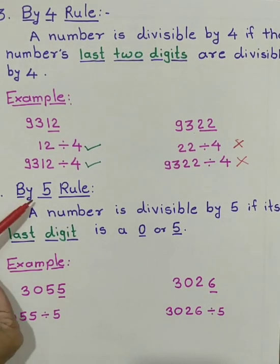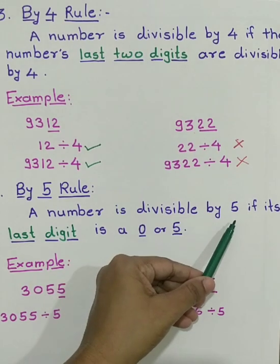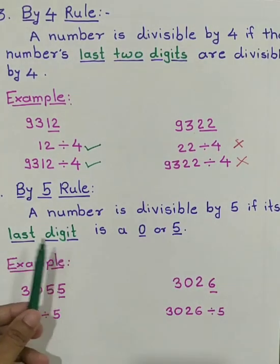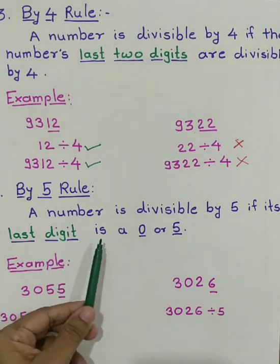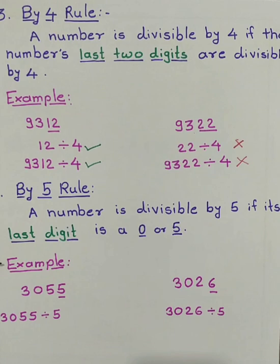So next rule is very easy rule. It is by 5 rule. Rule says, a number is divisible by 5 if its last digit is a 0 or 5. The first example, 3055. Its last digit is 5. Hence, we can say 3055 can be divided by 5.